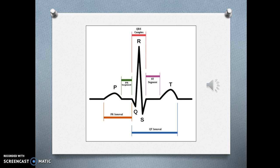An EKG complex includes the PR interval, P wave, QRS, an ST segment — which becomes very important as you move through coronary artery disease — and the T wave. The T wave represents ventricular repolarization, or the reset button, where the heart returns to its resting state to prepare for the next electrical stimulus.